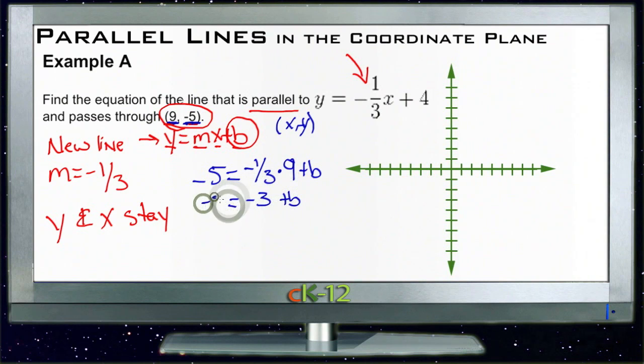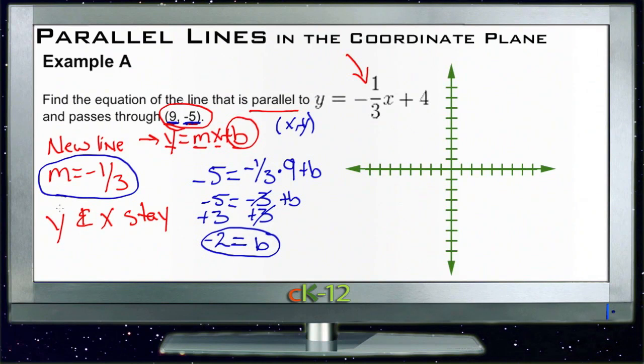We have B equals negative two. Now we have our B, and our M was negative one-third, the same as the other one. So we can write the equation of our line: Y equals negative one-third X minus two. That says our new line has a Y intercept of negative two and it rises negative one, runs three, or rises one, runs negative three. Either way we get negative one-third. Our new line looks like it goes right about here.